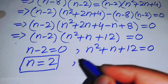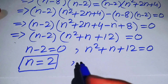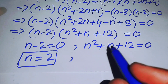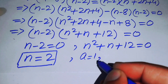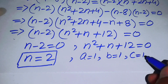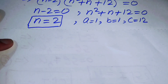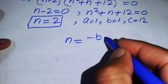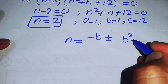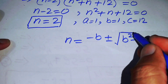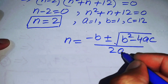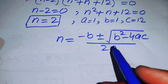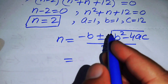To find the other solutions, we solve the quadratic n² + n + 12 = 0 using the quadratic formula. Here a = 1, b = 1, and c = 12. The quadratic formula is n = (-b ± √(b² - 4ac)) / (2a).